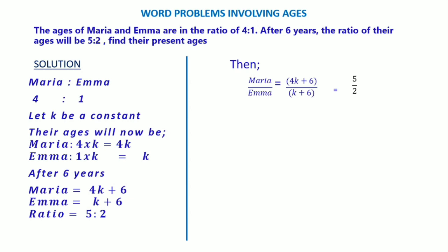We need to cross multiply. By cross multiplying, we shall get 4k plus 6 out of k plus 6 equals 5 out of 2. I'll cross multiply: 2 will multiply 4k plus 6, and 5 will multiply k plus 6.